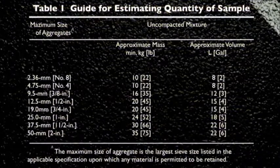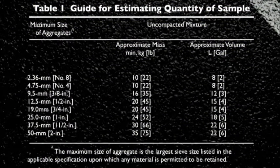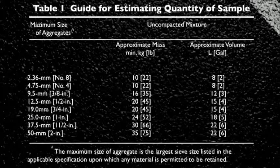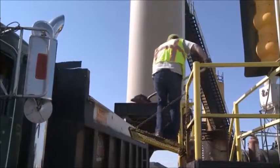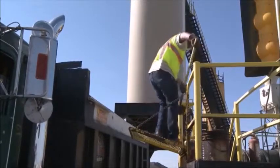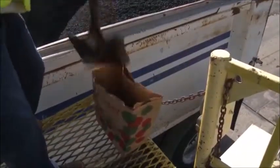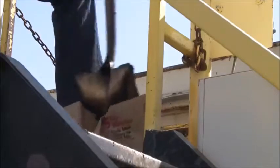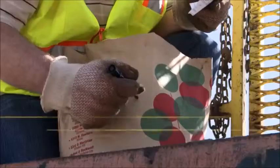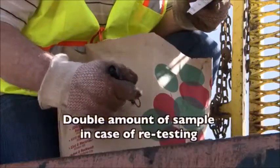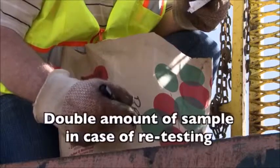The quantities listed in Table 1, Guide for Estimating Quantity of Sample, will not be sufficient for the full battery of tests routinely performed on bituminous paving mixtures. Make sure the quantity obtained meets or exceeds the minimum recommended for all anticipated tests. And when practical, double that amount to allow for the possibility of retests.